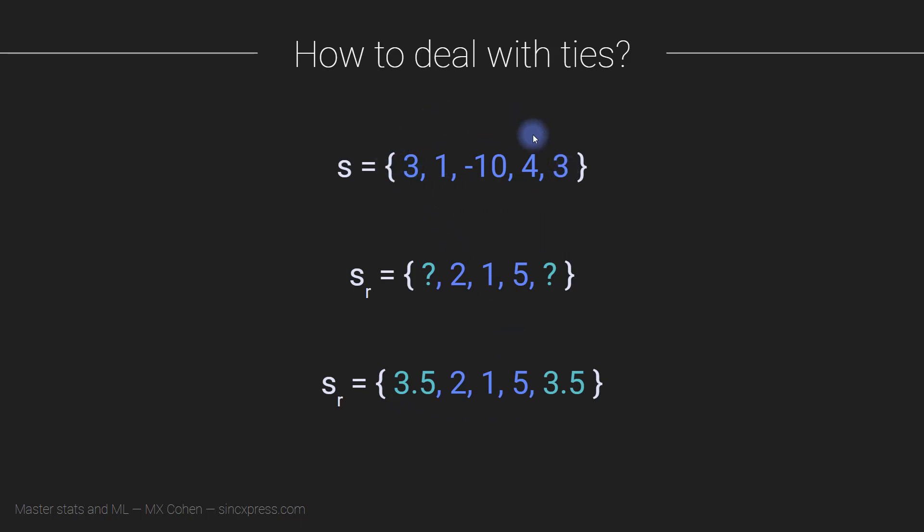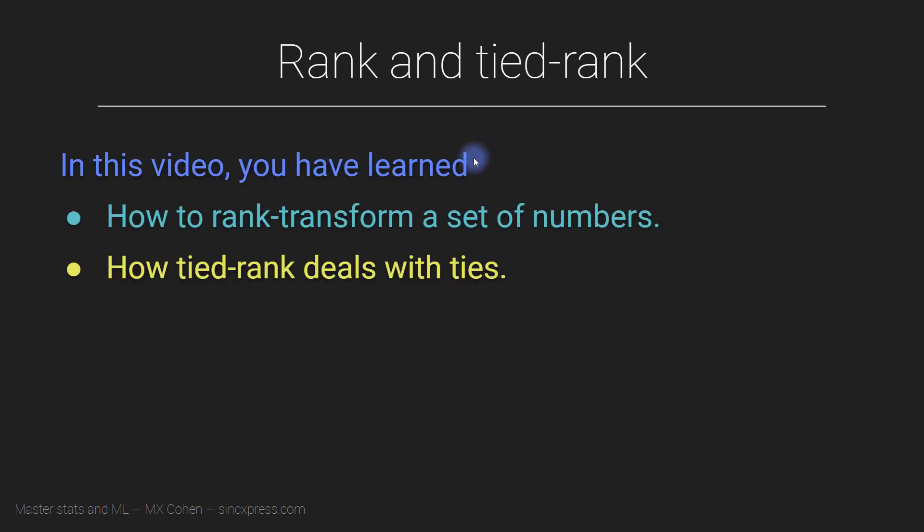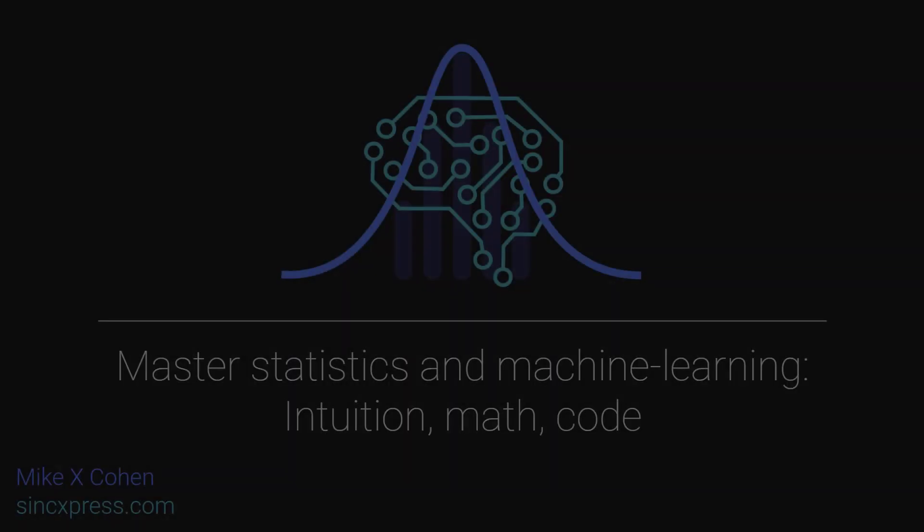And of course, you can also see that the tied rank operation is identical to the rank operation when there are no ties—when there are no repeated identical numbers in the set. So in this video, I introduced you to the rank transform and the adjustment to the tied rank transform.